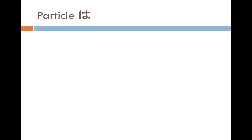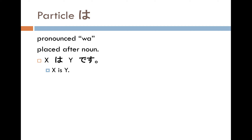Particle-wa: you pronounce it 'wa,' but you write hiragana 'ha.' Particle-wa is placed after a noun. The structure is X-wa Y-desu, which means 'X is Y.'